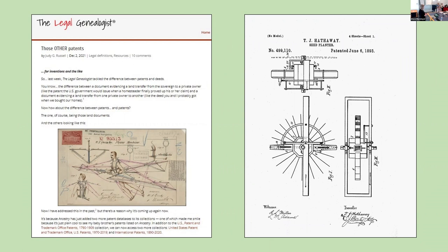I follow the Legal Genealogist blog by Judy Russell. She gave tips for finding U.S. invention patents in two new databases added to Ancestry in December 2021. She covers a lot of topics, much of it about law and how it affects genealogy. I knew my great-great-grandfather Thomas Jefferson Hathaway had been issued a patent for a well drilling machine, but I'd read he had another one I couldn't find. When I saw her post, I searched those new Ancestry databases and found his Sea Planter patent from 1893 — one page of several describing his invention, with his name and the names of witnesses to his patent filing.